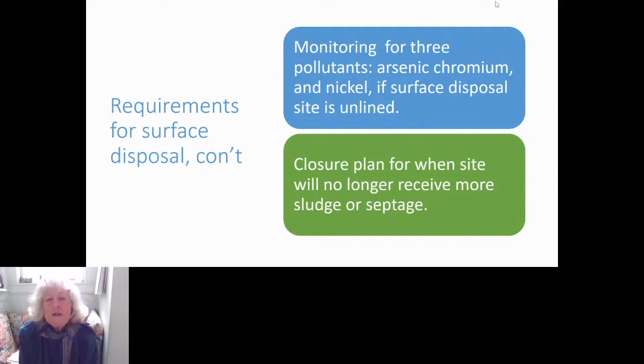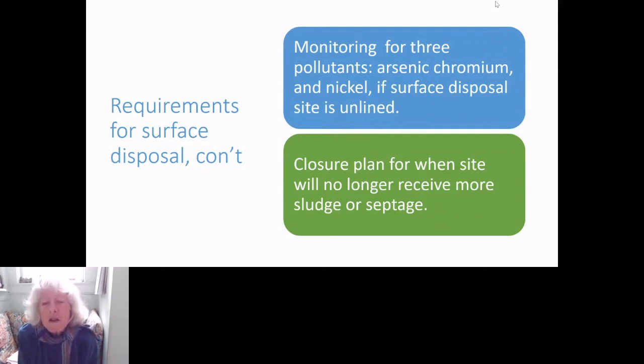If you have a surface disposal site where you're permanently disposing of sludge, there's a requirement to monitor for three pollutants — arsenic, chromium, and nickel — if the site is unlined. If the site is lined with tarps or similar, you don't need to monitor for those. This only applies to sludge from a treatment plant, not to domestic septage. You also need to prepare a closure plan when you're done adding sludge to the site.